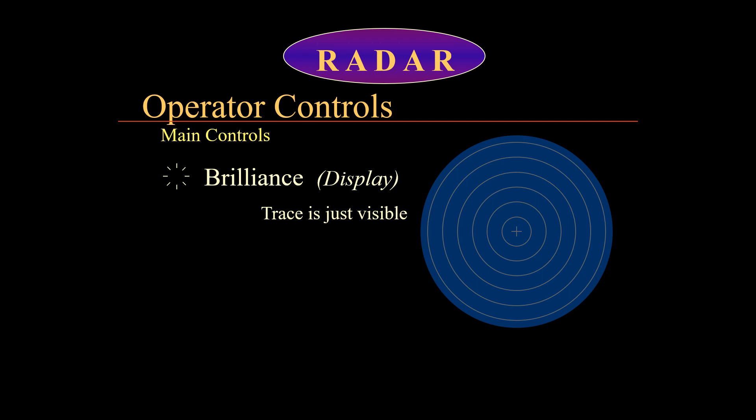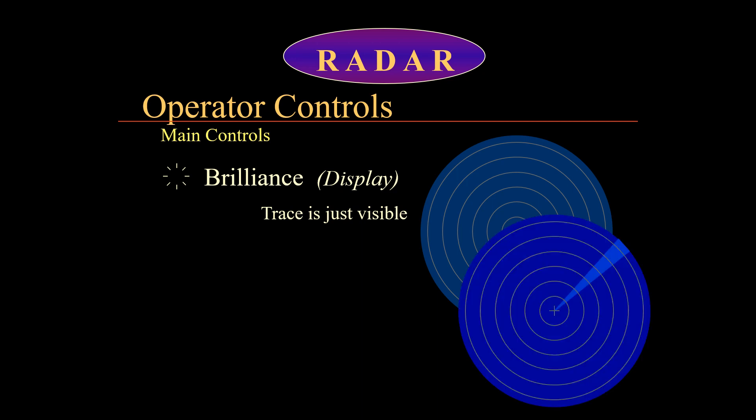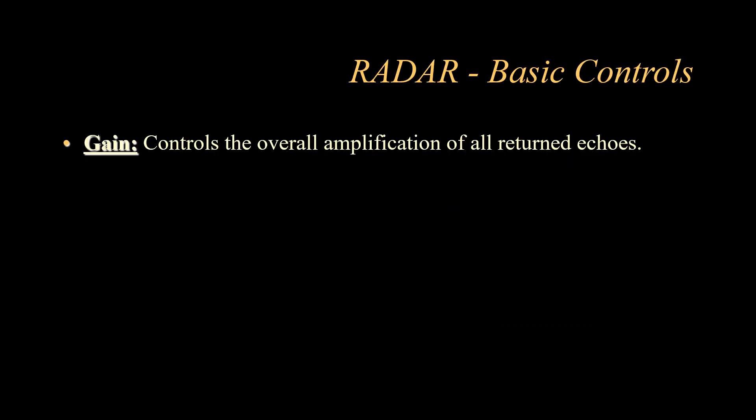Here I'll show you an example of how two different brilliance control settings look. In one example the screen is much brighter than the other. The trace becomes visible depending on how bright it is set. If you keep the brilliance control completely turned down, you will not be able to see the targets or the trace.